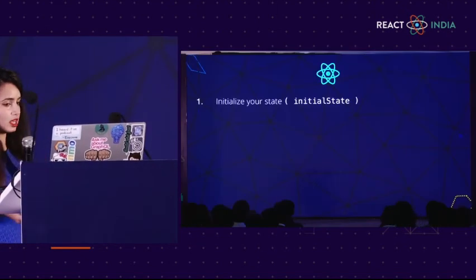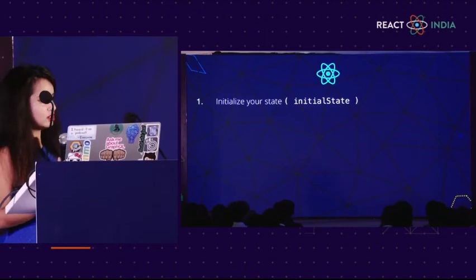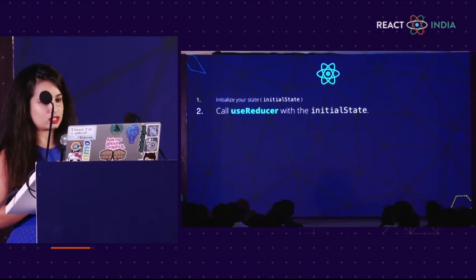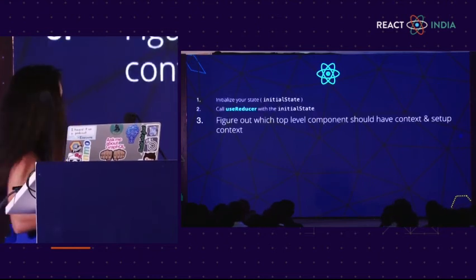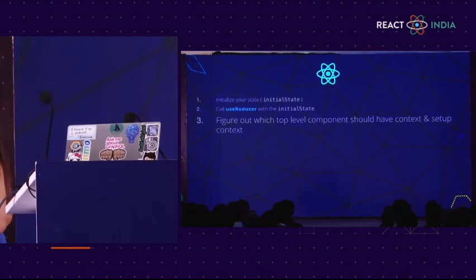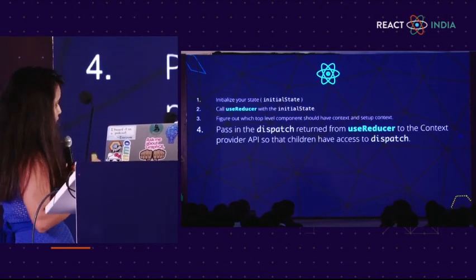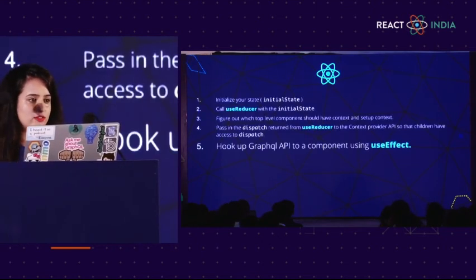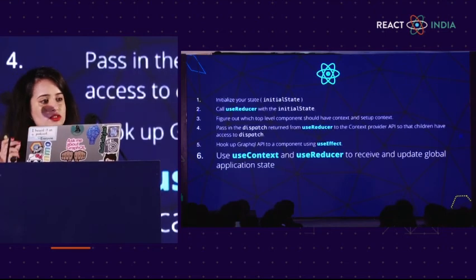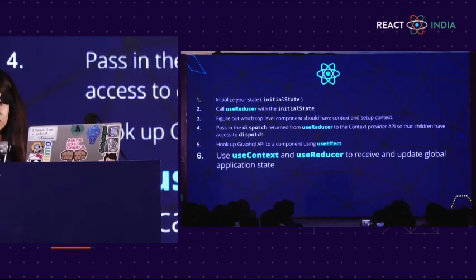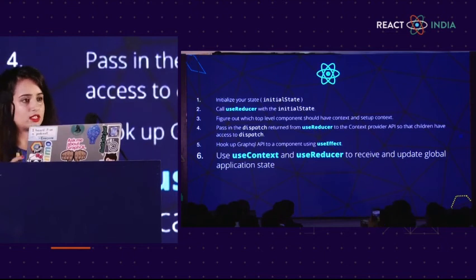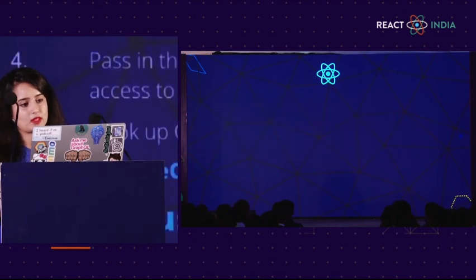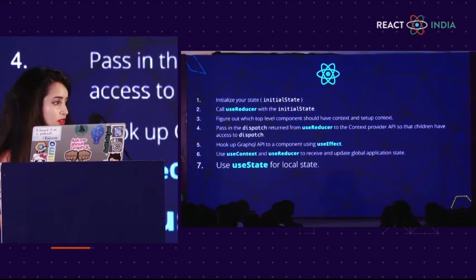To recap: first, initialize your state at the very top component, then call useReducer with the initial state, figure out which top-level components should have context and set up context, then pass in dispatch to useReducer. Hook up the GraphQL API in useEffect, use useContext and useReducer to receive and update the global state and dispatch actions whenever you need to, and use useState for updating local state.